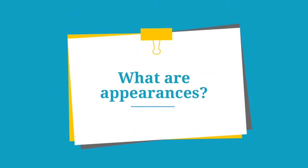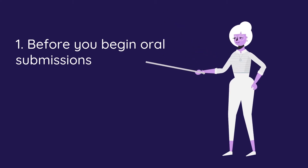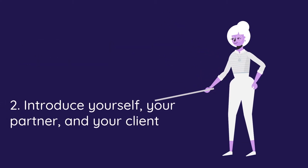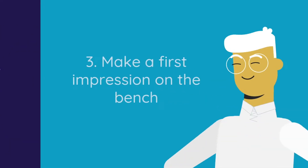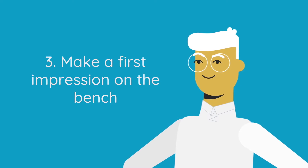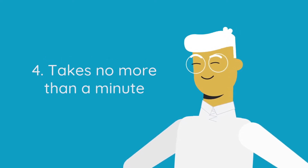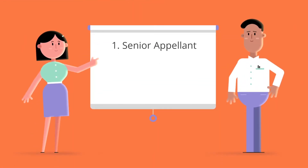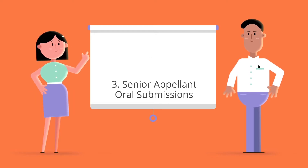First, what are appearances? Appearances happen before you begin your oral outline of your argument. They act as a way to introduce yourself and your partner, as well as who you're representing. They're a great way to make a fabulous first impression on the bench, and shouldn't take longer than a minute at most. After the senior appellant gives their appearance, the senior respondent will then deliver their appearance, and then the senior appellant will deliver their oral submissions.